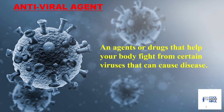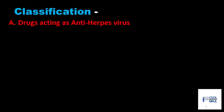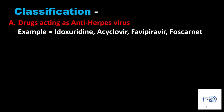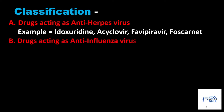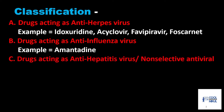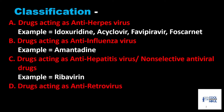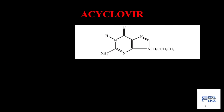Antiviral agents are mainly drugs that help your body fight certain viruses that cause disease or viral infection. The classification is: first, drugs acting as anti-herpes virus — examples are idoxuridine, acyclovir, favipiravir, and foscarnet; drugs acting on anti-influenza virus — example is amantadine; drugs acting as anti-hepatitis virus or non-selective antiviral — example is ribavirin; and drugs acting as antiretrovirus — example is zidovudine.